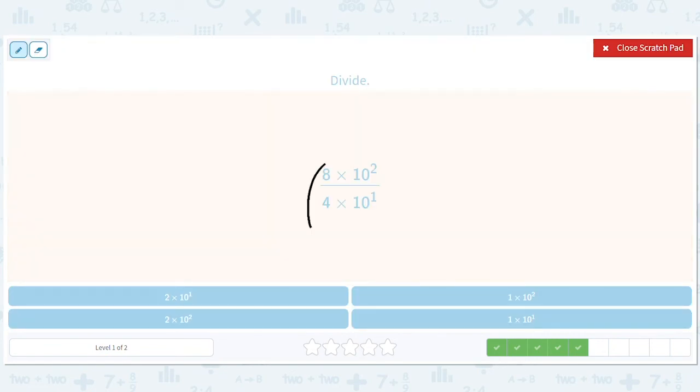Your turn. Okay, 8 divided by 4 is 2. 10 to the second divided by 10 to the first is 2 minus 1 is 1. So it's 10 to the first. So it should be 2 times 10 to the first.